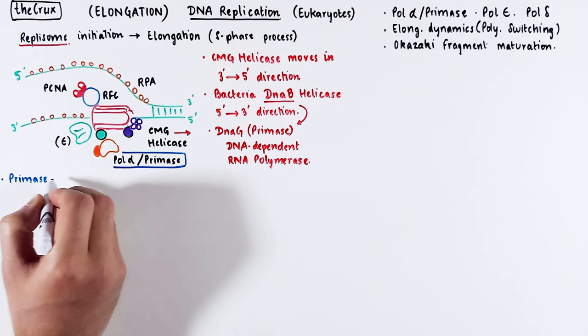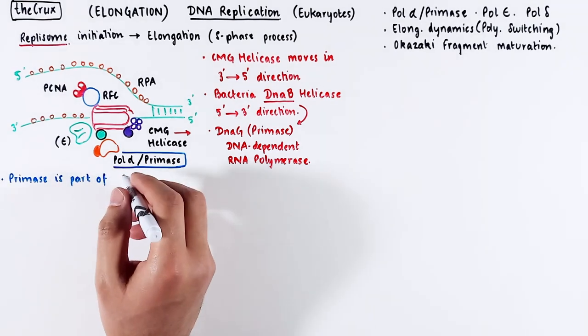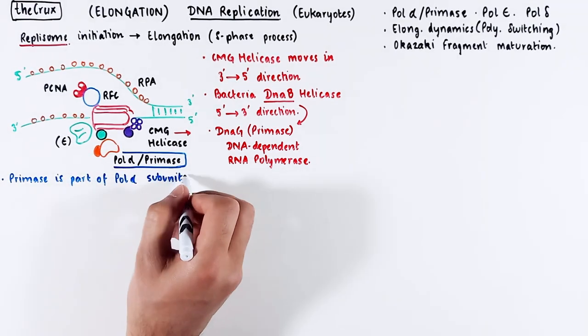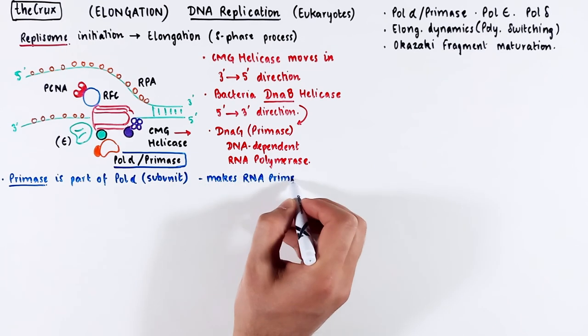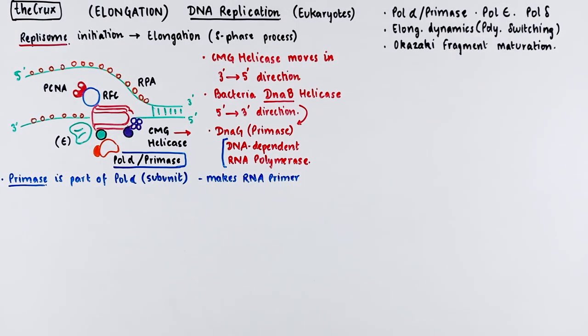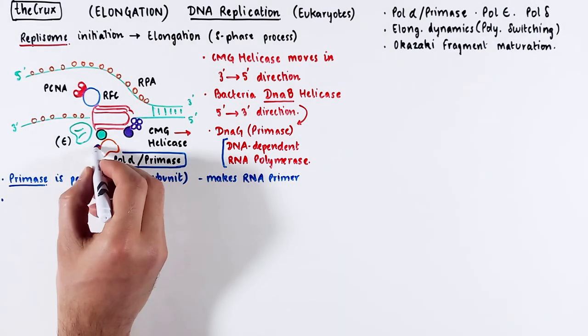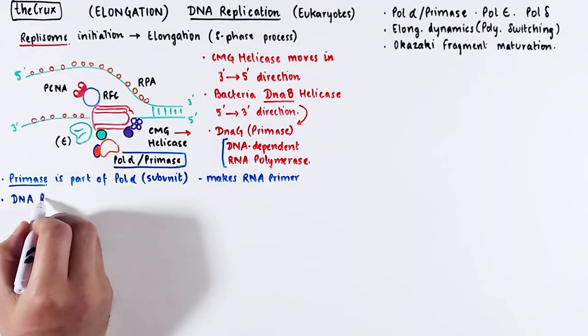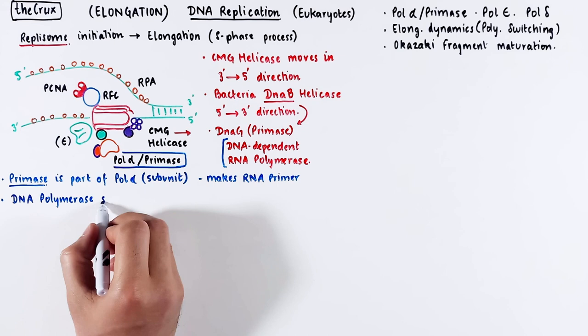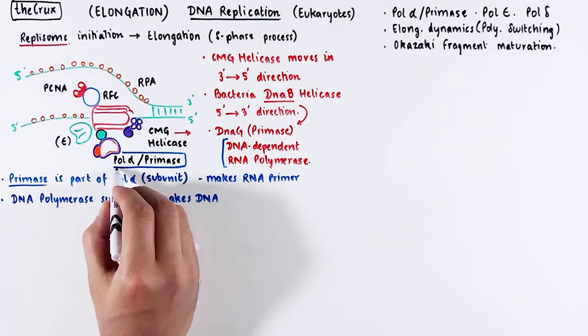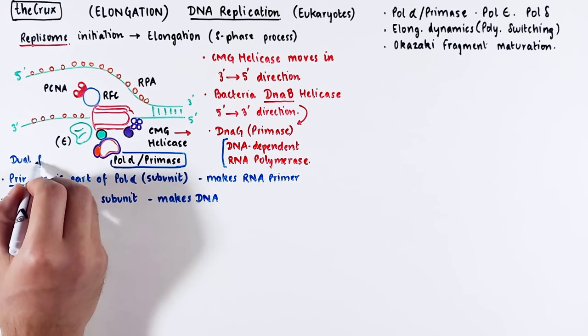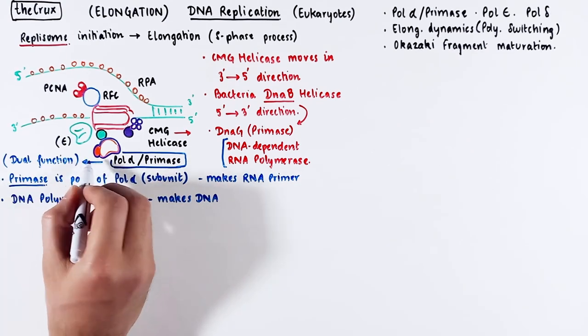Now in contrast, the eukaryotic primase is actually a subunit of a larger DNA polymerase called DNA polymerase alpha. The primase still has the same function. It makes the RNA primer by using DNA as a template. The bigger component of this is the DNA polymerase subunit, which is DNA polymerase alpha and that makes DNA. So this polymerase alpha and primase has a dual function. It makes both RNA and DNA.